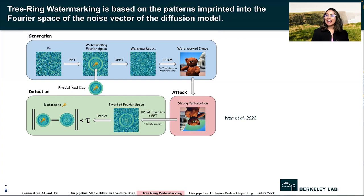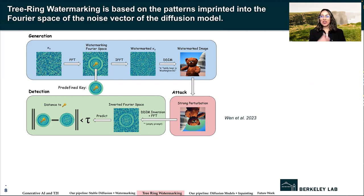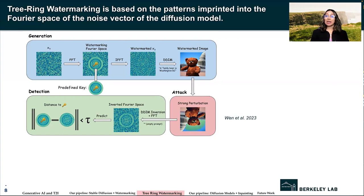The watermark embeds a pattern into the initial noise vector for sampling. The patterns are structured in the Fourier space, so they are invariant to convolutions, crops, dilations — aspects of ML training we are all familiar with. After image generation, the watermark signal is detected by inverting the diffusion process to retrieve the noise vector, which is then checked for an embedded signal. This technique can be easily applied to arbitrary diffusion models, including text-conditioned stable diffusion. Their watermark is semantically hidden in the image space and claimed to be far more robust than watermarking alternatives currently being deployed.